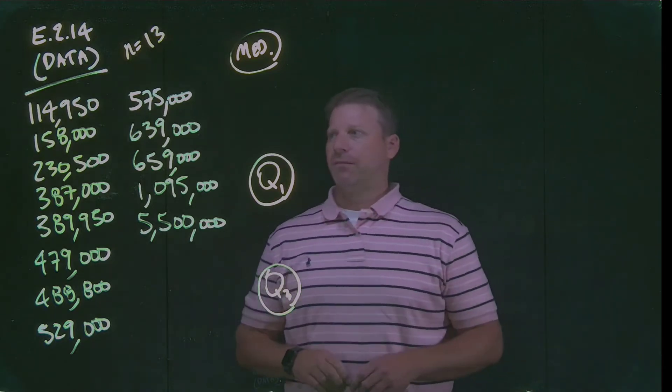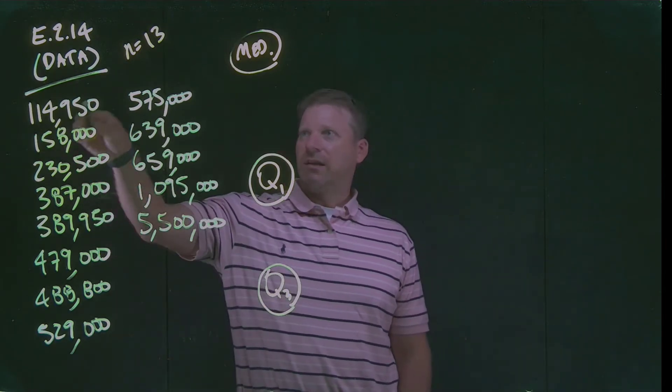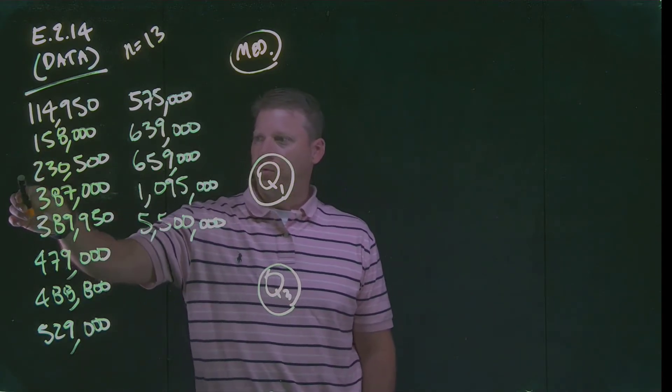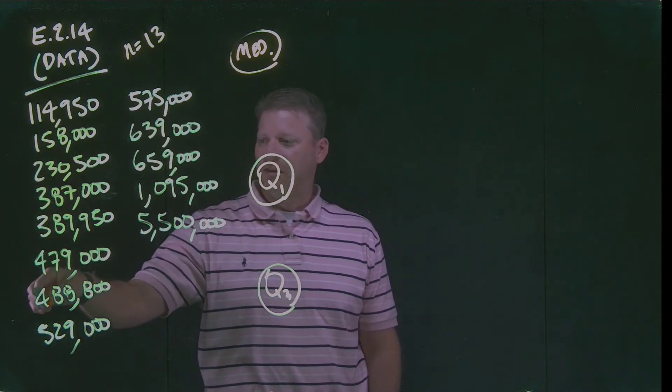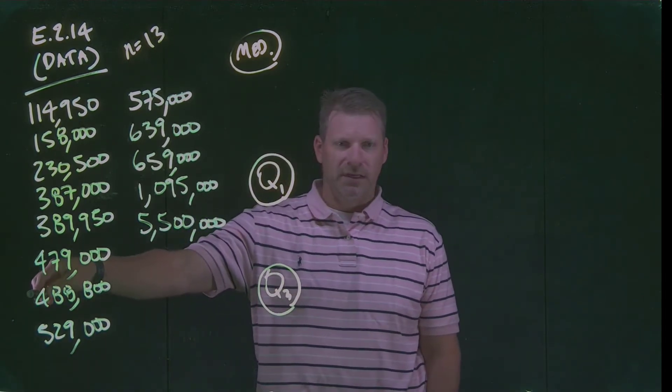So we want to look at the median. The first thing we can do is say, we're going to find the median is the value in the middle. In this case, we have 13 different data points. If we start counting in, 1, 2, 3, 4, 5, 6, 7, the seventh data point is the one in the middle. Our median is $488,800.